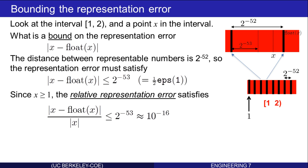Therefore, one half eps(1), or 2 to the negative 53, is a bound on the relative representation error — the difference between x and its nearest representable number normalized by the size of x.